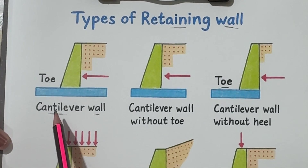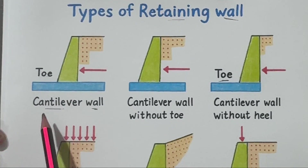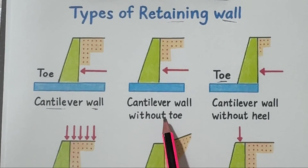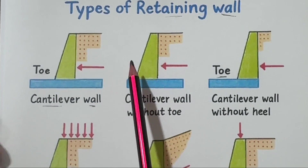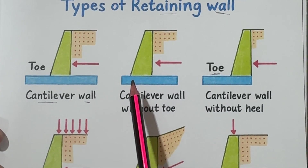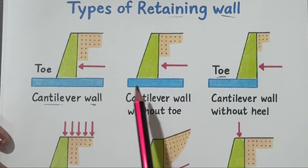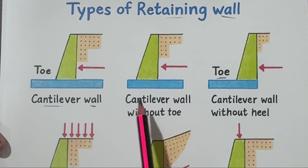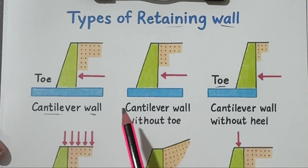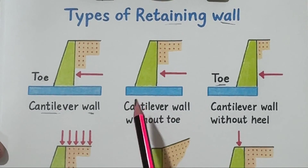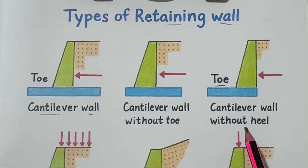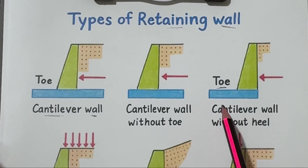This design is strong and economical for medium heights, which is why it's used so often. Number two: cantilever wall without a toe. Here the front part, the toe, is removed. This type is used when there isn't enough space in front of the wall, like beside a road or building. It still works on the same principle, but since the base is smaller it needs extra reinforcement to stay stable.